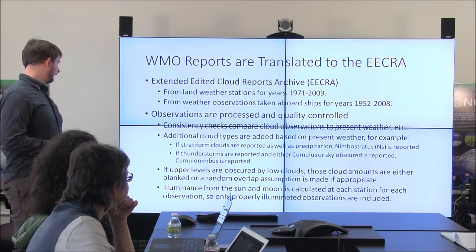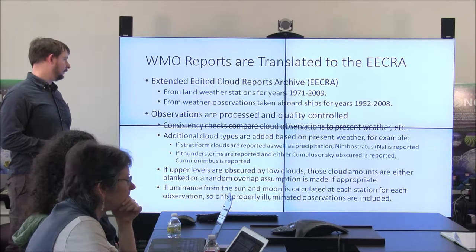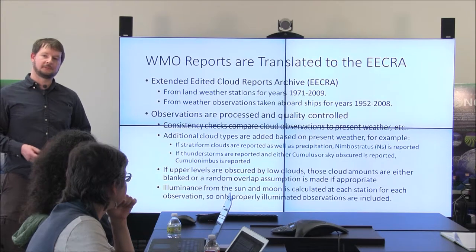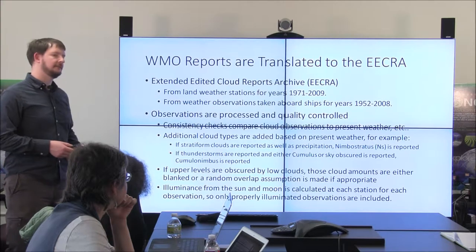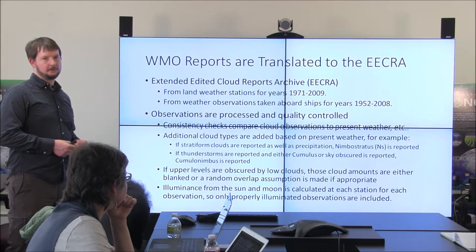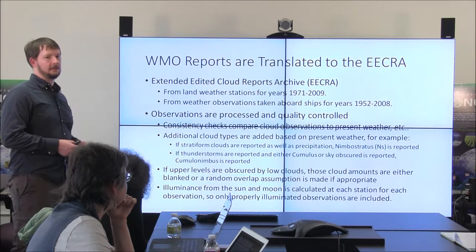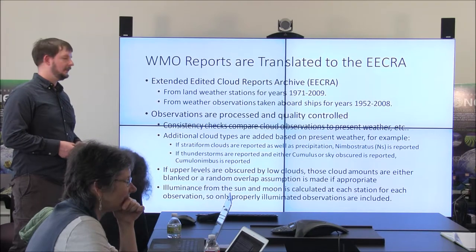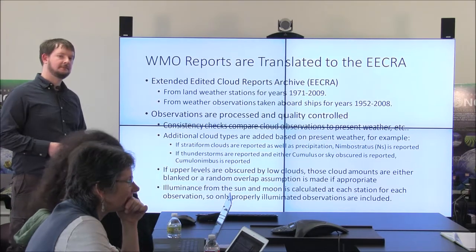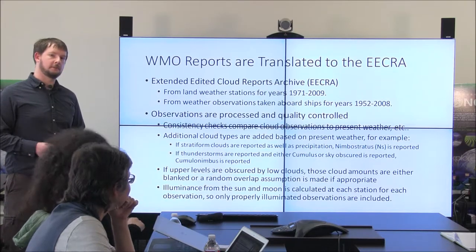Because the Earth is dark half the time, we take into account the illuminance from the sun and the moon before adding any observation to our climatology. We archive all reports but also provide an illuminance variable indicating whether it was bright enough to actually observe the cloud cover. There's a paper — Hahn 1995 — that goes into great detail on how that was done. So we use only observations that were well illuminated by the sun and the moon.